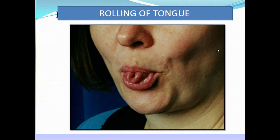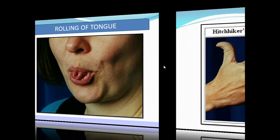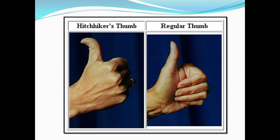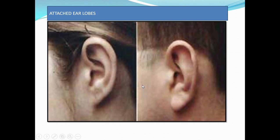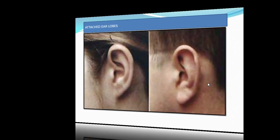Welcome to Vandana's biology class. Today we will be dealing with an interesting topic. See the picture here — it shows what is called rolling of the tongue; some of us can do it and some cannot. Here you can see what is called hitchhiker's thumb — some people can bend their thumb like this and some cannot. Here you can see the normal hairline, and in this picture a small difference — this kind of hairline is called widow's peak. Some people have attached earlobes and some people have free earlobes. So you are seeing several traits or characters in these pictures.